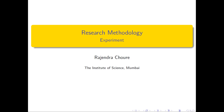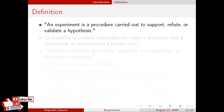As we have discussed in previous sessions, experiment is the research method where the experimenter or researcher actively controls at least one variable. Before starting a detailed discussion on experiments, we will study the definition of experiment, because the definition will limit our discussion. An experiment is a procedure carried out to support, refute, or validate a hypothesis.